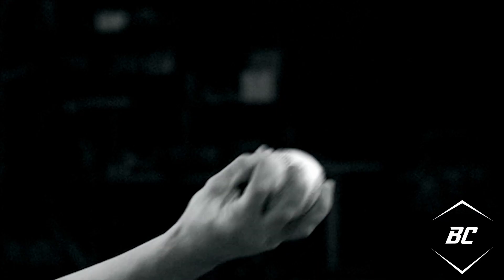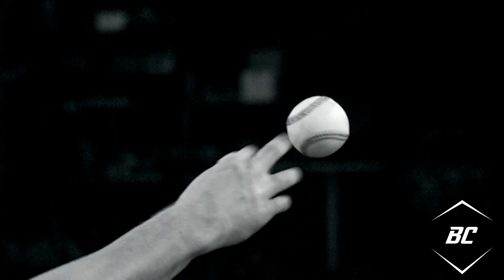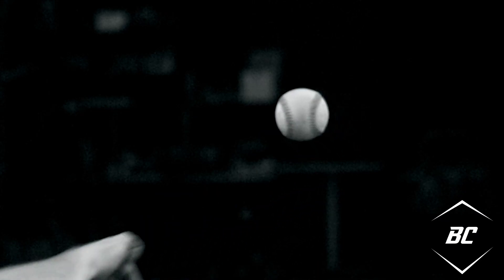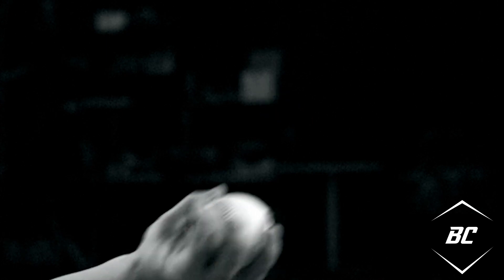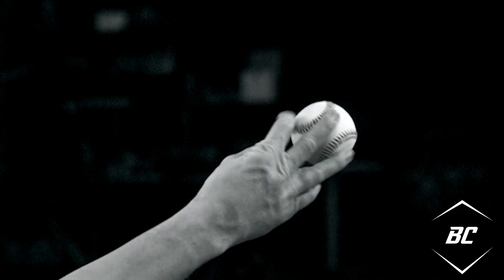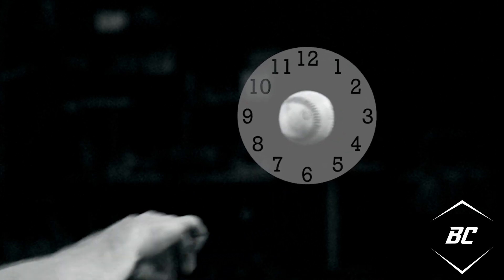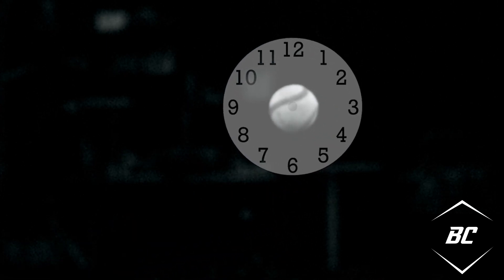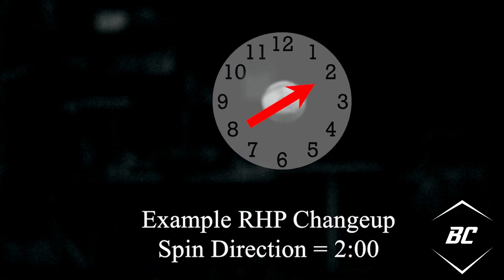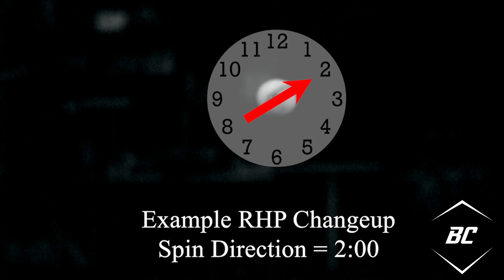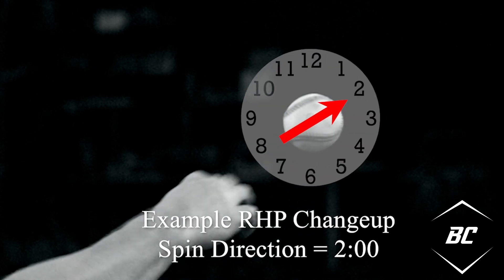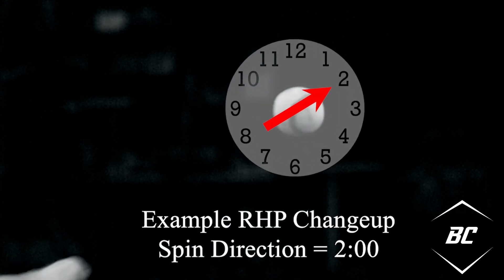The easiest way to visualize this is to imagine a clock. To determine spin direction, look at the rotation of the baseball and compare it with the hour and minute hands on a clock — just like telling time. For example, the spin direction of a changeup could read out as two o'clock, signifying the ball is spinning from that direction.